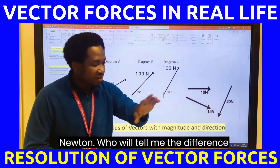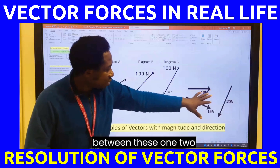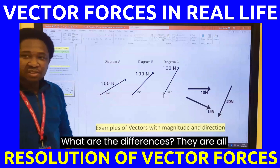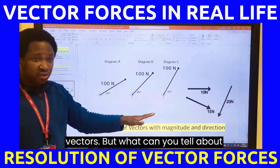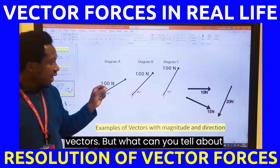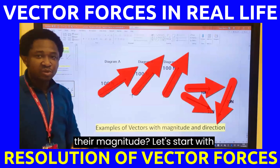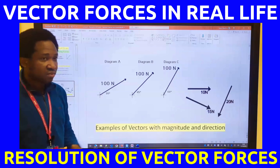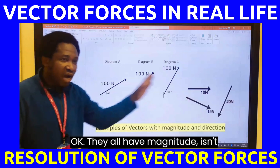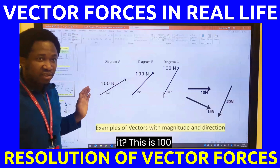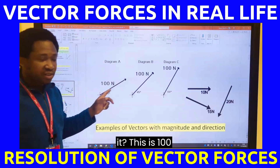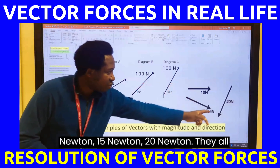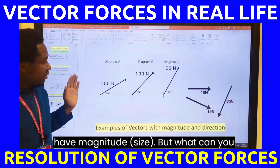Who will tell me the difference between these first group of 1, 2, 3 and the second group of 1, 2, 3? What are the differences? They are all vectors. But what can you tell about their magnitude? They all have magnitude — 100 Newton, 100 Newton, 100 Newton, 10 Newton, 15 Newton, 20 Newton. They all have magnitude.